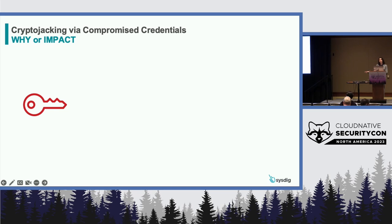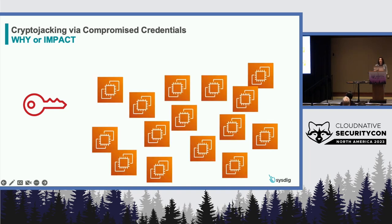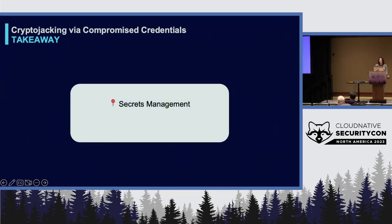Why attackers execute this type of attack and the impact on victims is largely the same as the first example. However, a leaked access key can allow an attacker to create a very large number of instances — likely many more than the victim would have done on their own — making the potential loss even greater. Think of the kind of AWS bill that would be the stuff of nightmares. Secrets management is a critical part of operating in the cloud, but alongside that, you really need real-time monitoring to notice if secrets are being abused. The real-time part is key, because it doesn't take attackers very long to generate enormous bills if they have the right kind of access.